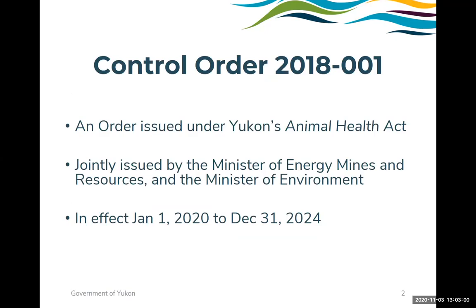Although the Control Order is new — it just came into effect this January — the work to develop this specialized approach to a fairly controversial issue in Yukon took years. Yukon is a unique jurisdiction where sheep territory overlaps the majority of the territory and encompasses many of the farms. The vast territory contributes to both challenges and beauty, with highly valued wildlife and a small but hardy small ruminant industry.